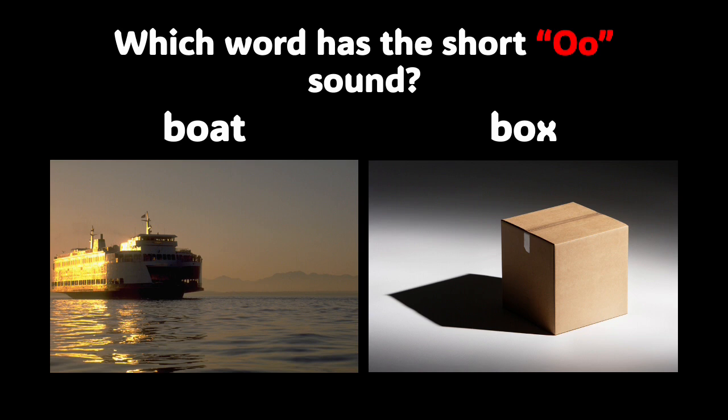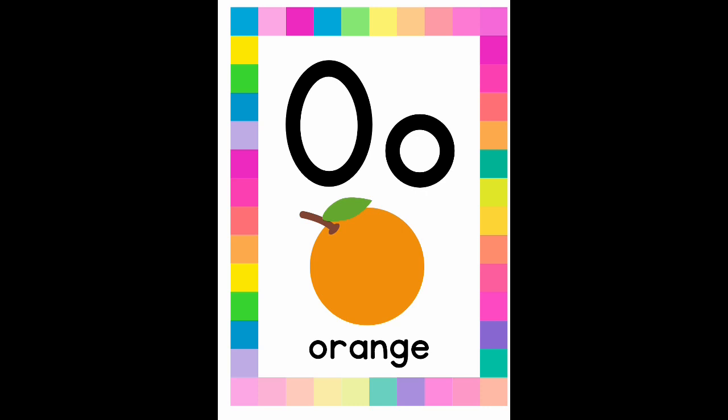Thank you so much for listening, watching, and learning with Avant-Garde Books. Here is that picture one last time of the letter O, which is a vowel in the English language — meaning that letter can make two sounds. It can make the long O sound, like in boat, oaks, coat, or hope. But the letter O can also make the short O sound, and that's what we went over today, like in hop, top, dog, or popcorn. Those words have the short O sound.